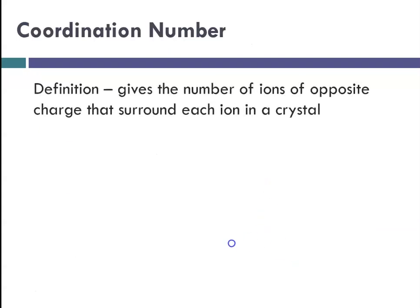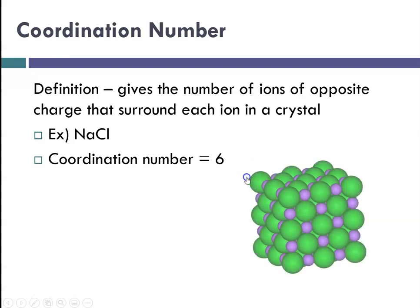We also talk about ionic compounds having a coordination number. The definition of the coordination number is, it tells you the number of ions of opposite charge that surround each ion in a crystal. For example, sodium chloride has a coordination number of 6, and so if I showed you a model of sodium chloride and you counted, each of these particular ions is attached or surrounded by 6 ions of opposite charge.